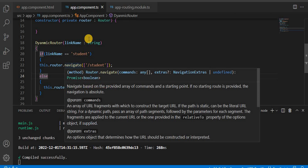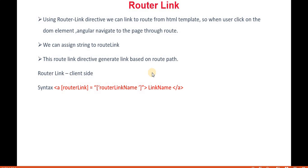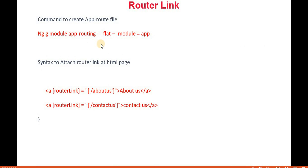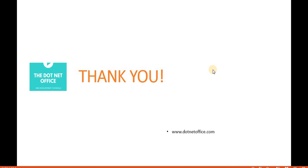This is the way we implement router outlet and router link in Angular 15 — either through the router link directive in the template or through the router.navigate method in the component. If you want to create a routing module using the CLI command, the command is: ng g module app-routing --flat. This creates the routing module under the root folder. That's it for this video — if you have any questions, please comment. Thank you.